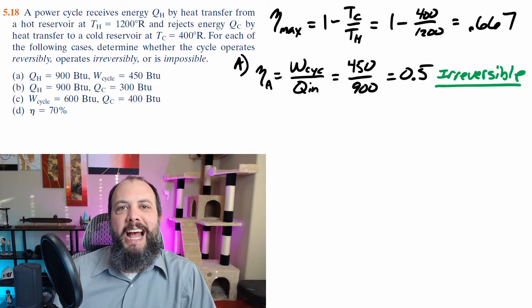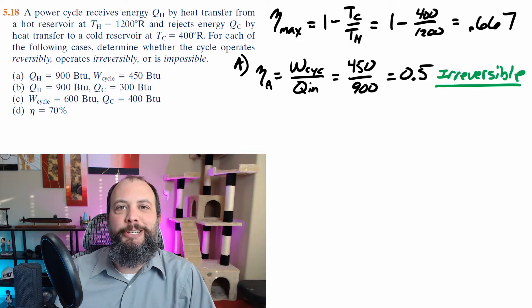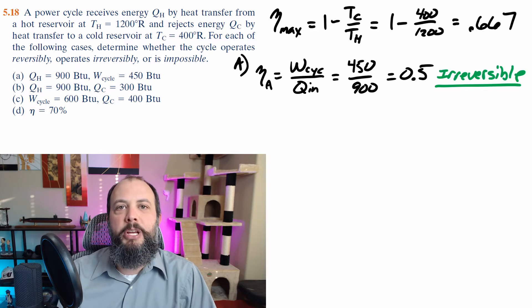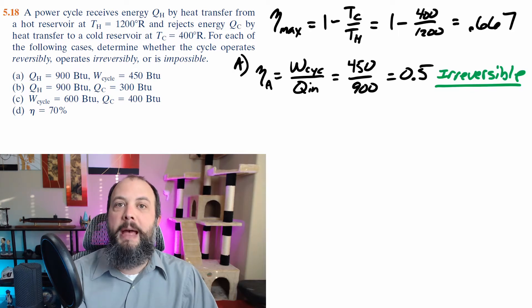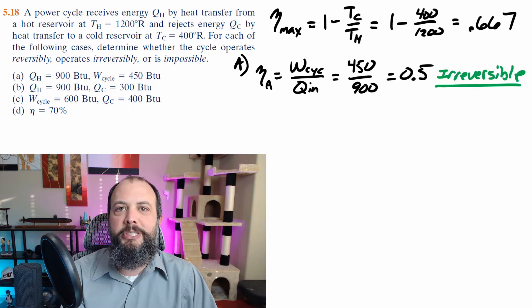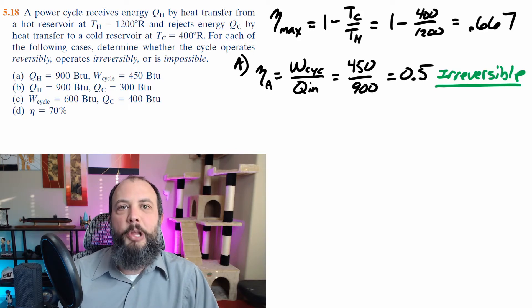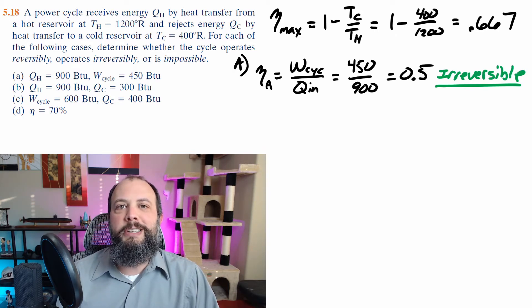In part A, we see 900 BTUs as heat into the system, and 450 BTUs of that becomes work. So half of the heat in goes out as work. So that's an efficiency of 50%. 50% is below the maximum, 66.7%. So this is irreversible, meaning that there are some losses, some irreversibilities in the system, causing the system to perform a little bit less than perfect.